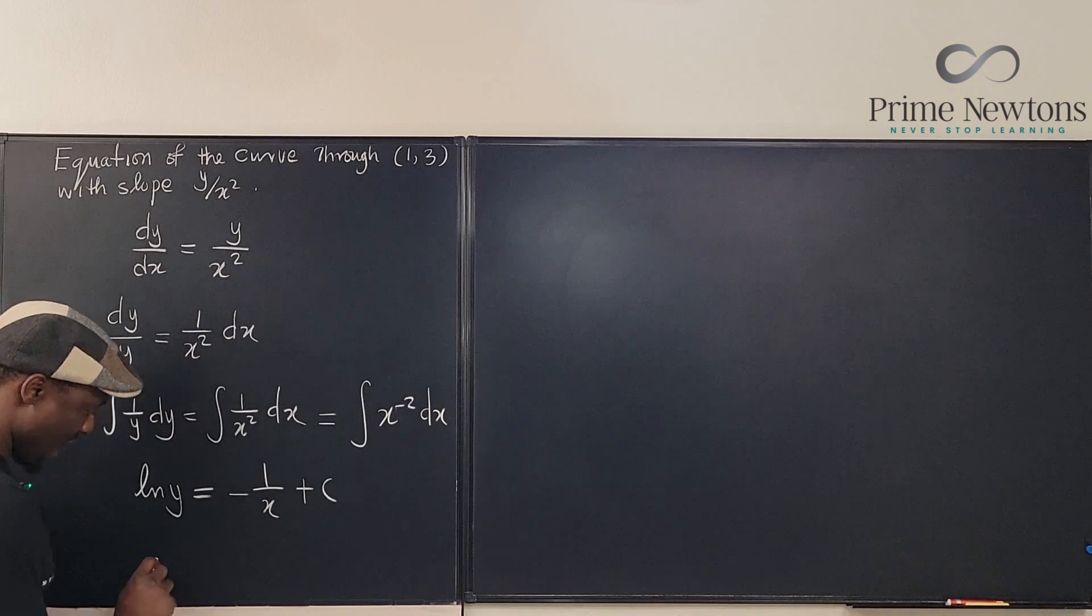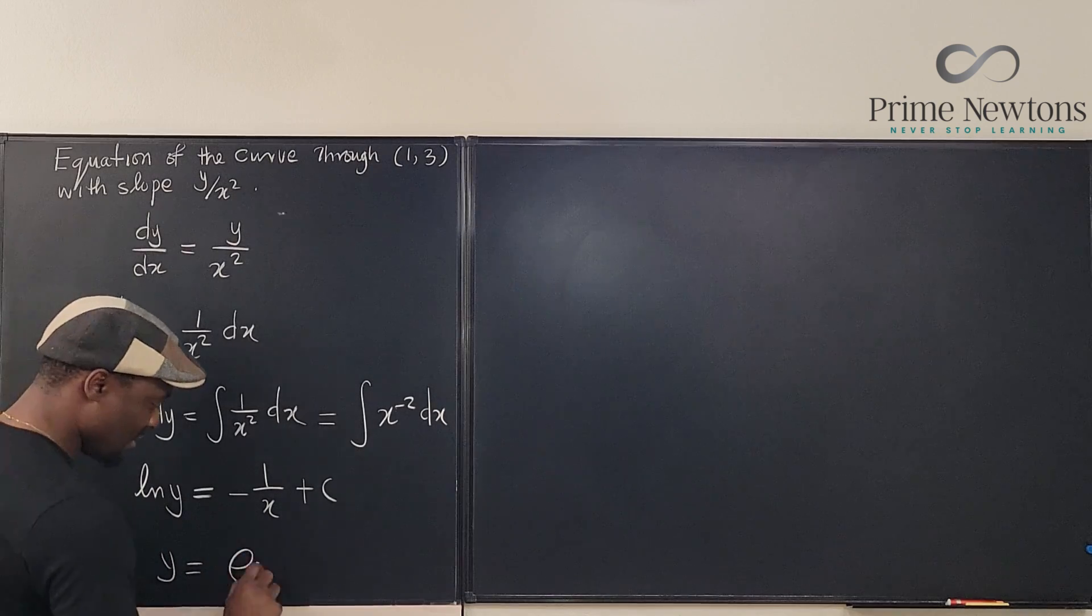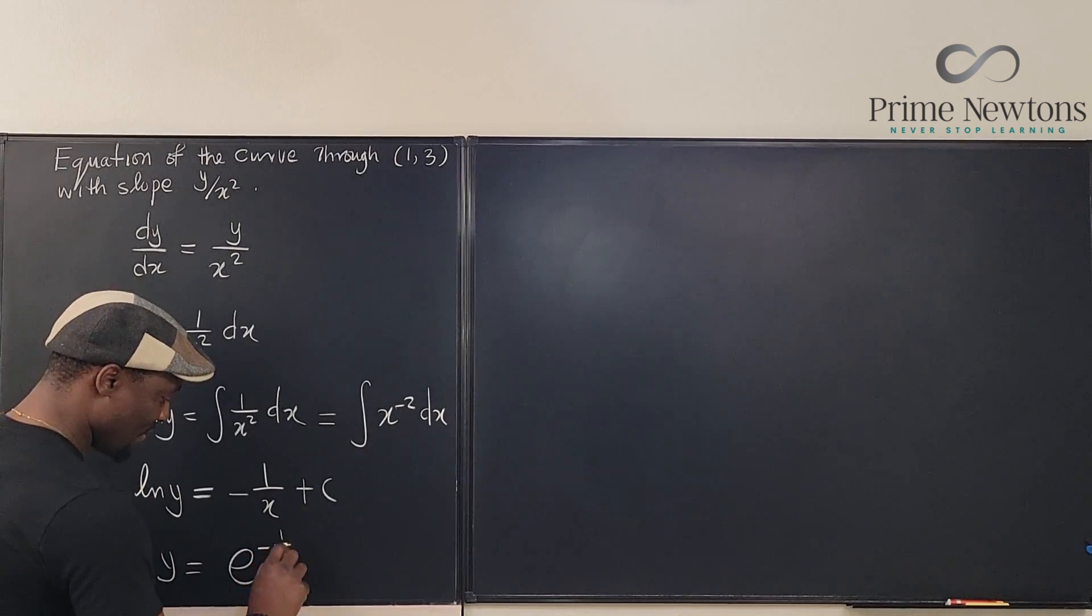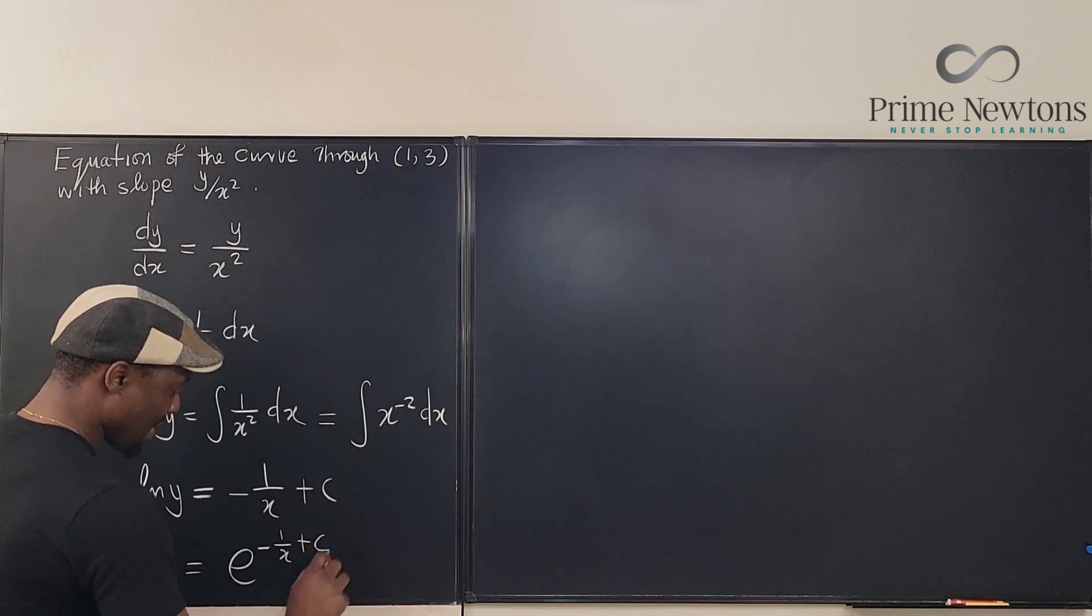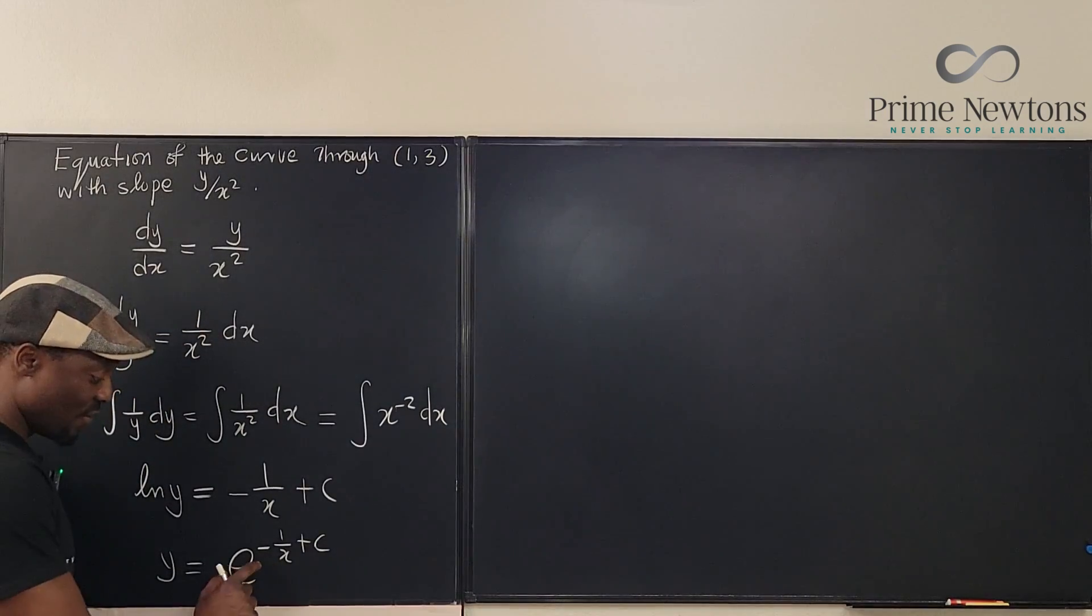We say that y is equal to, we take the e of both sides, it's going to be e to the negative 1 over x plus c. Nice. And we can rewrite this. If we split this, this becomes y